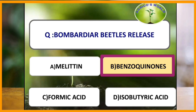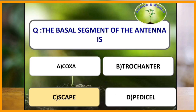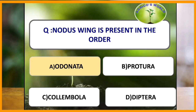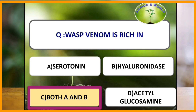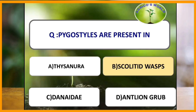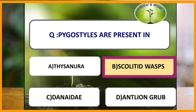The basal segment of the antenna is known as scape. Nodus wing is present in which of the following order? Nodus wing is present in Odonata. Wasp venom is rich in which of the following? Wasp venom consists of serotonin and hyaluronidase. Pygostyles are present in which of the following insects? Pygostyles are present in scoliid wasps.